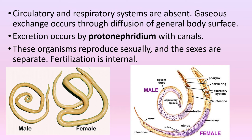These organisms reproduce sexually and the sexes are separate, with fertilization being internal. A male nematode is usually slightly smaller than the female nematode. Here, you can see the difference between a female and a male nematode.